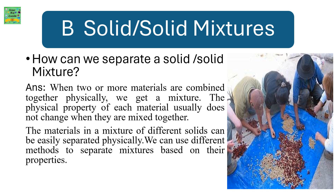Solid or solid mixtures. How can we separate a solid or solid mixture? When two or more materials are combined together physically, we get a mixture. The physical property of each material usually does not change when they are mixed together. The materials in a mixture of different solids can easily be separated physically. We can use different methods to separate mixtures based on their properties.